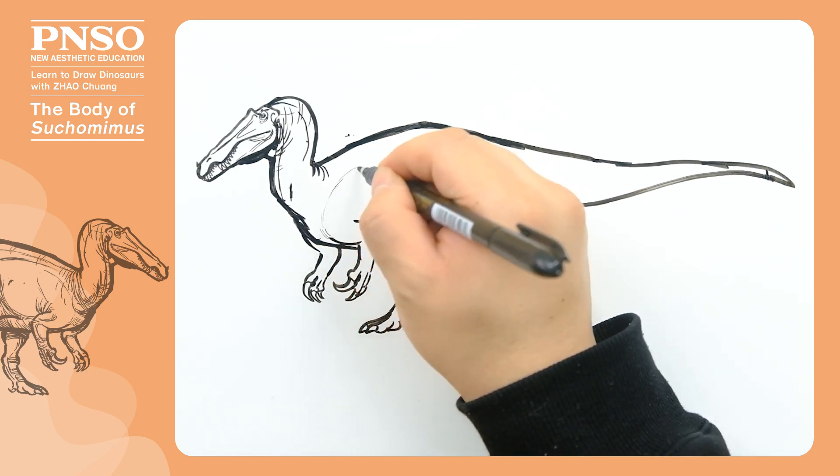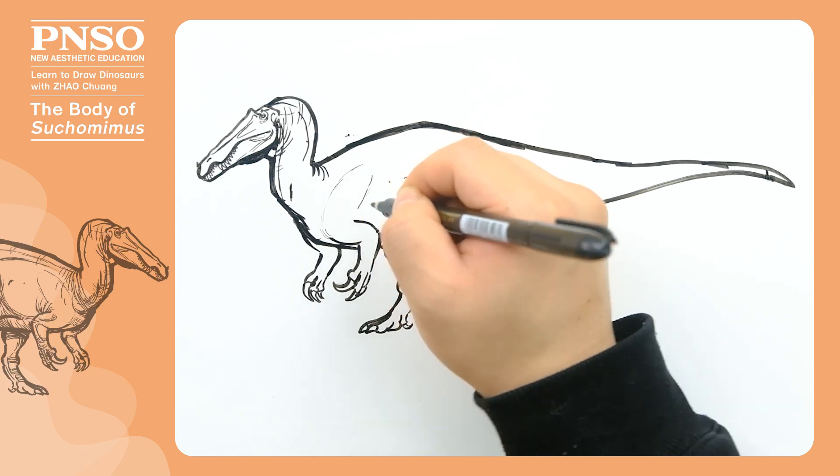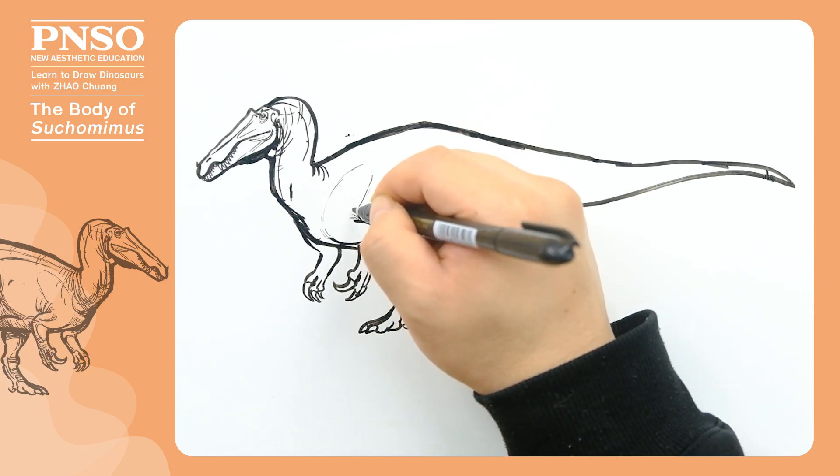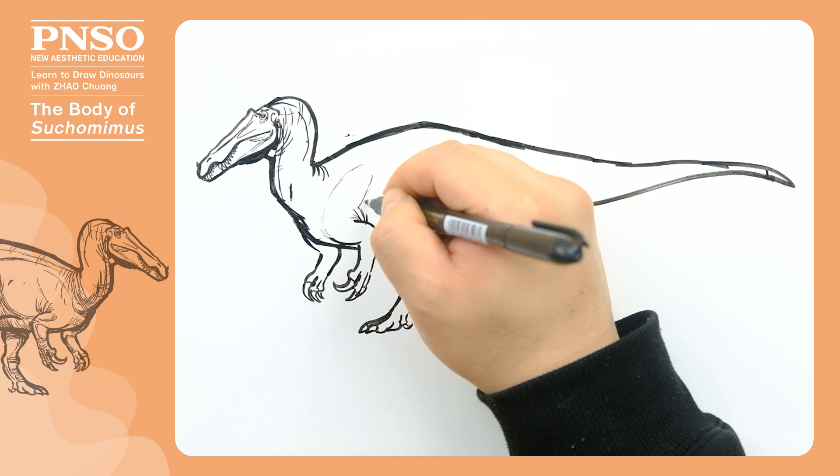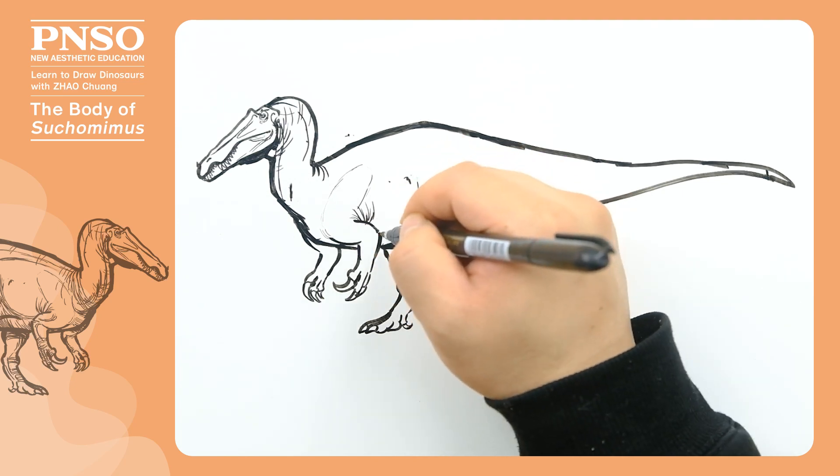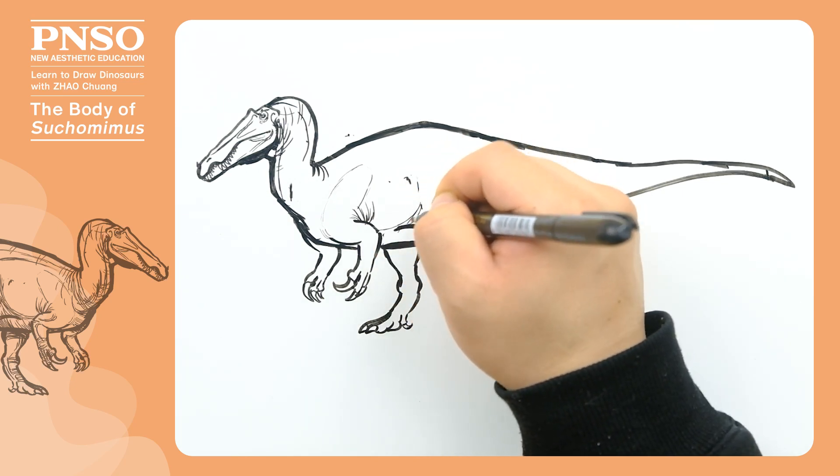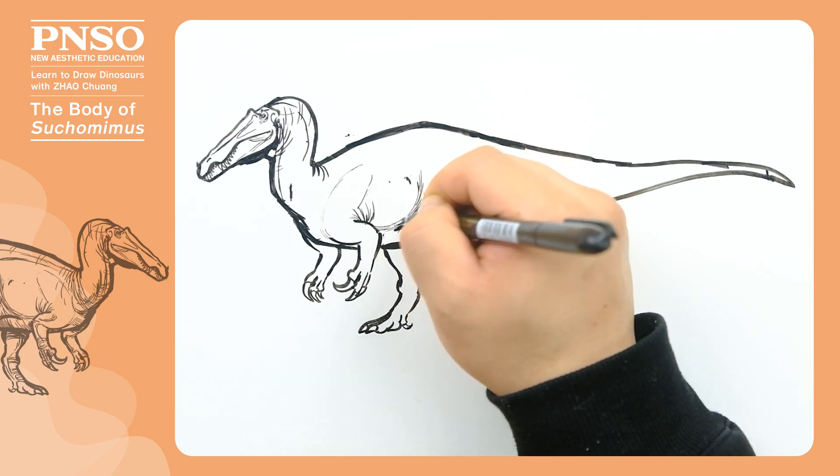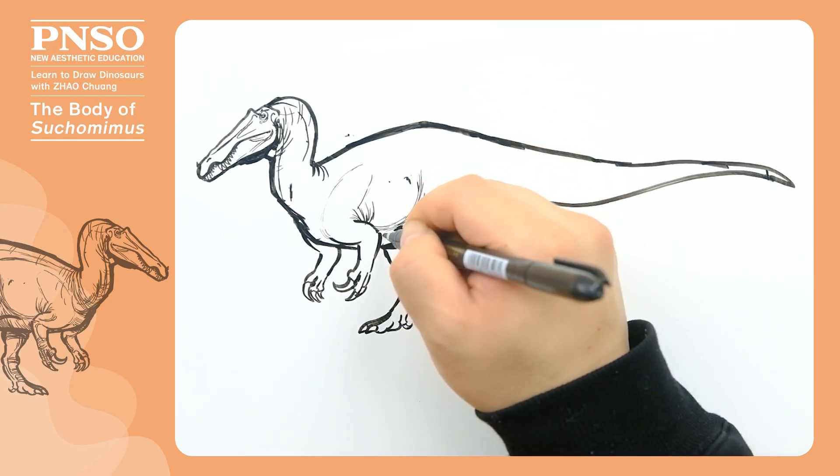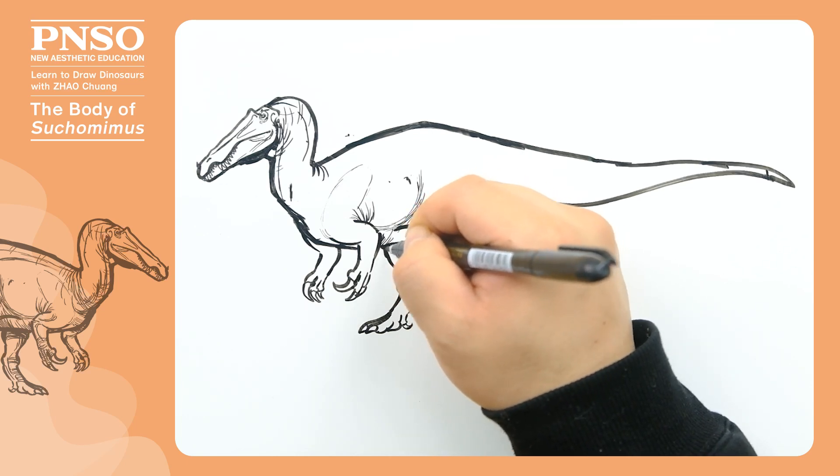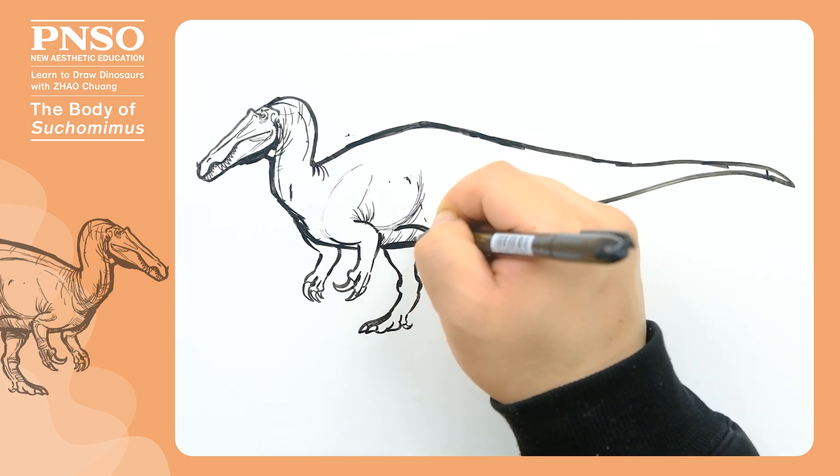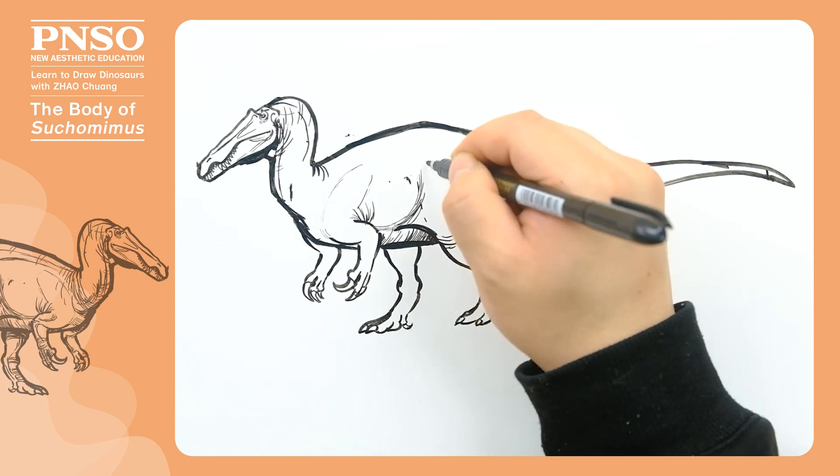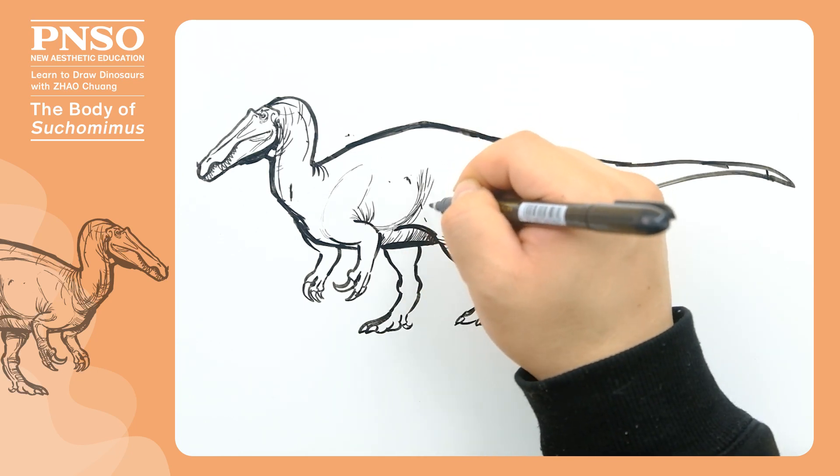Next, we add some details. First, let's use thinner lines to draw its shoulders. Then, draw some folds at the base of the arms, and some stripes on its belly. There are also some folds on the front and back of its thighs.